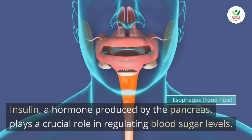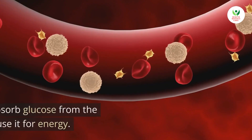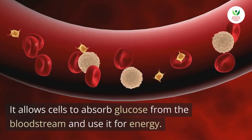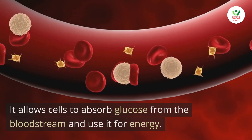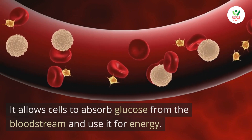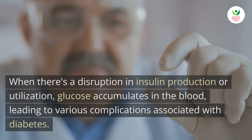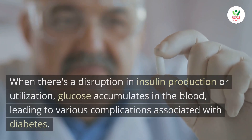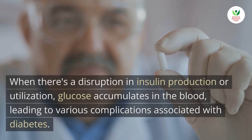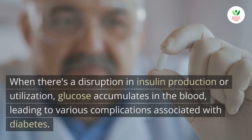Insulin, a hormone produced by the pancreas, plays a crucial role in regulating blood sugar levels. It allows cells to absorb glucose from the bloodstream and use it for energy. When there's a disruption in insulin production or utilization, glucose accumulates in the blood, leading to various complications associated with diabetes.